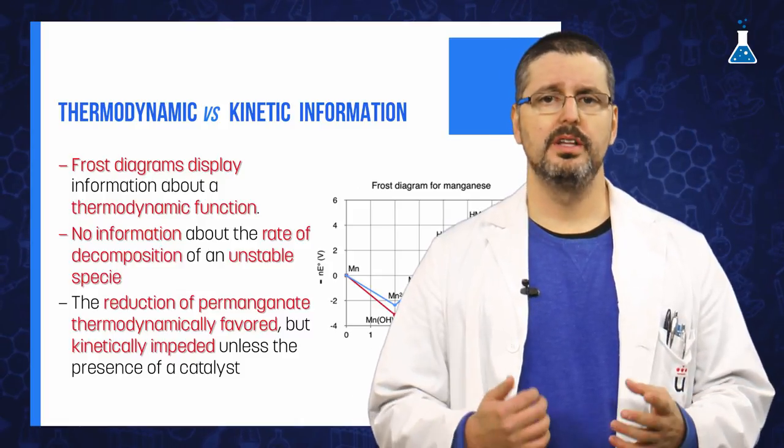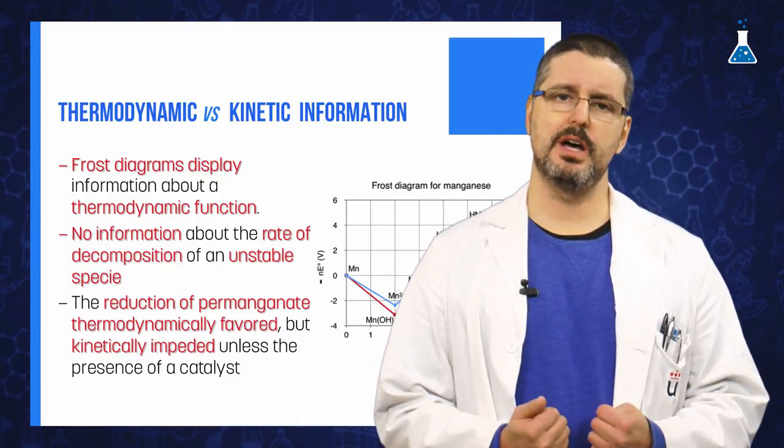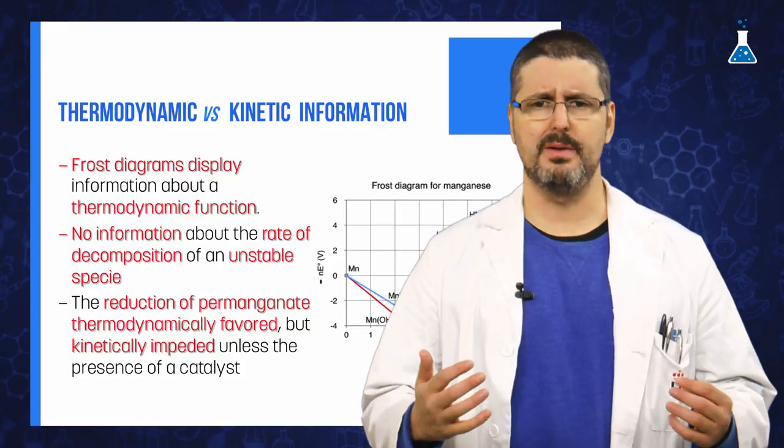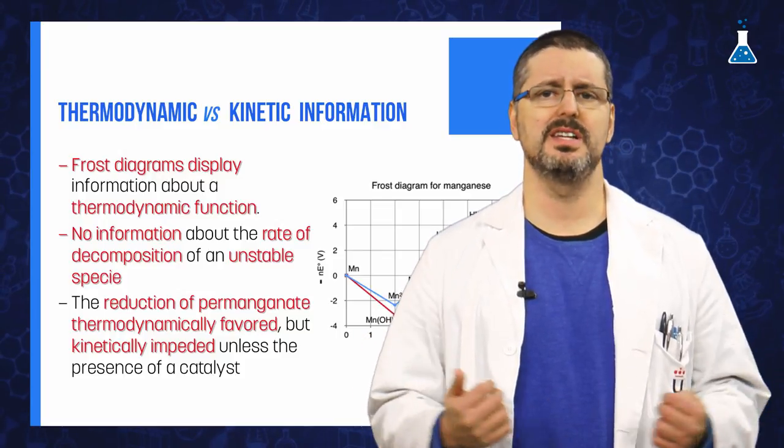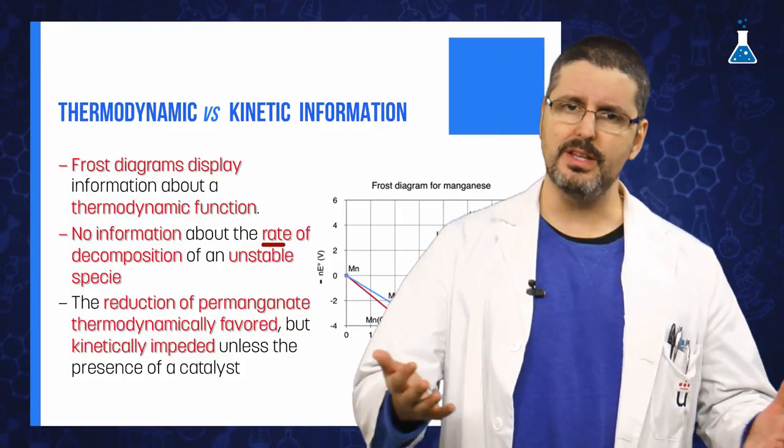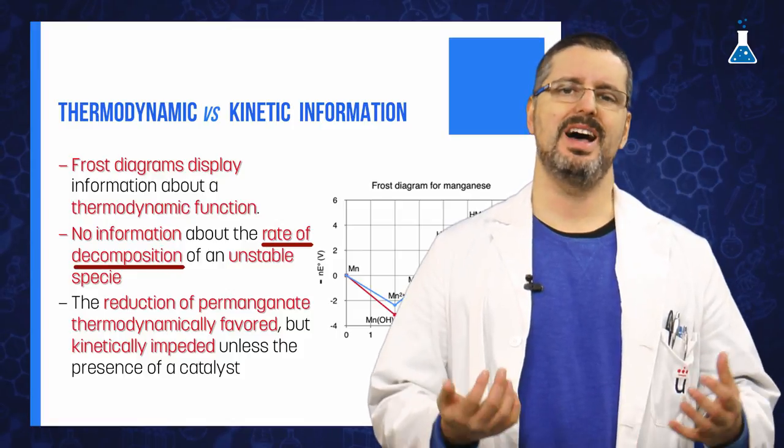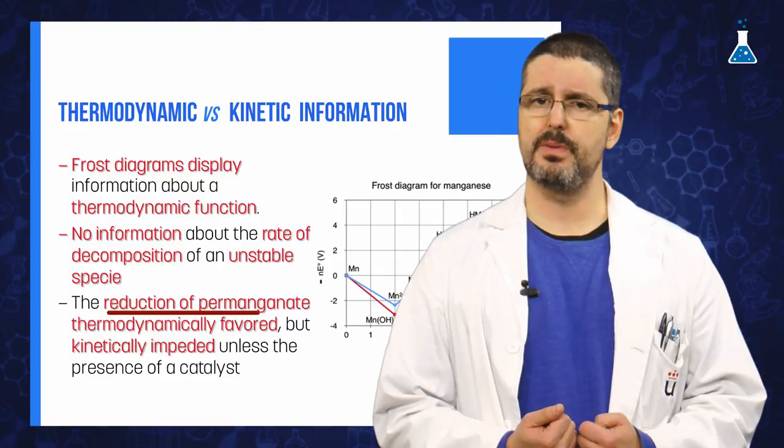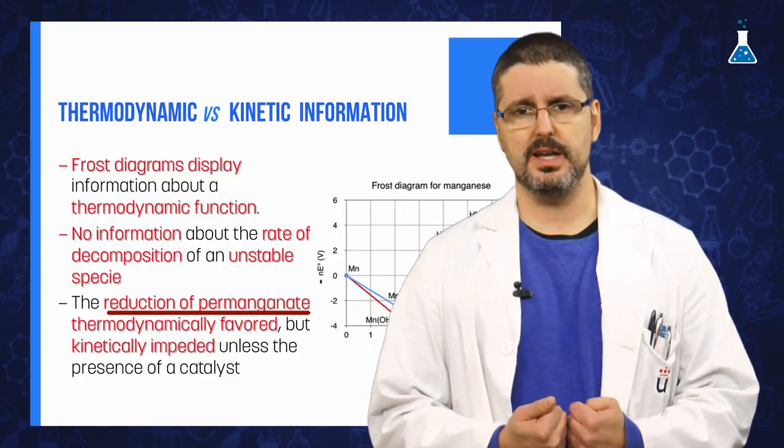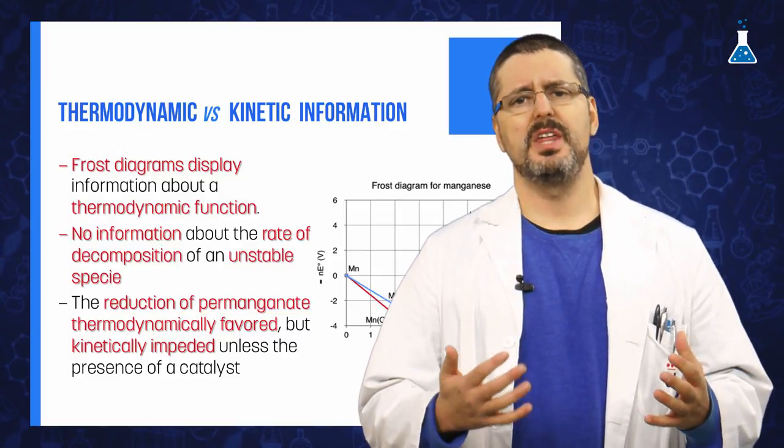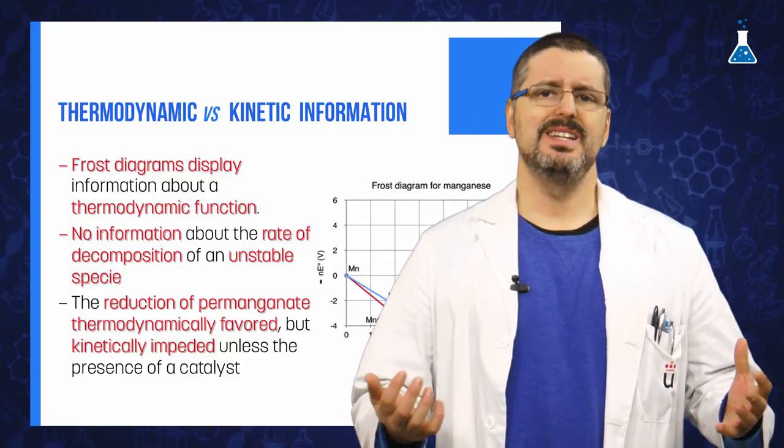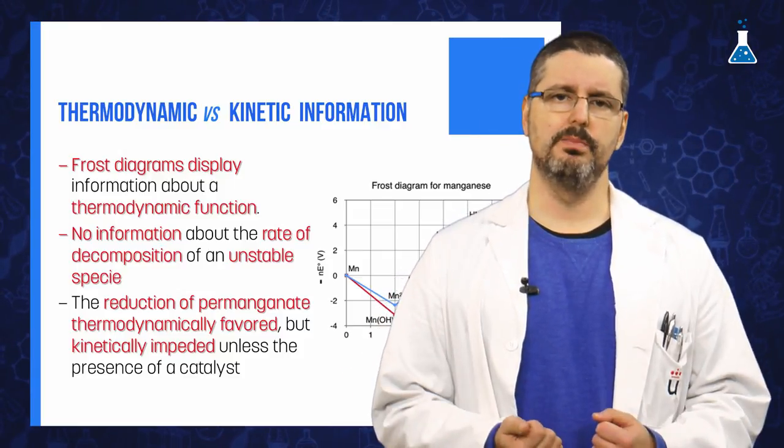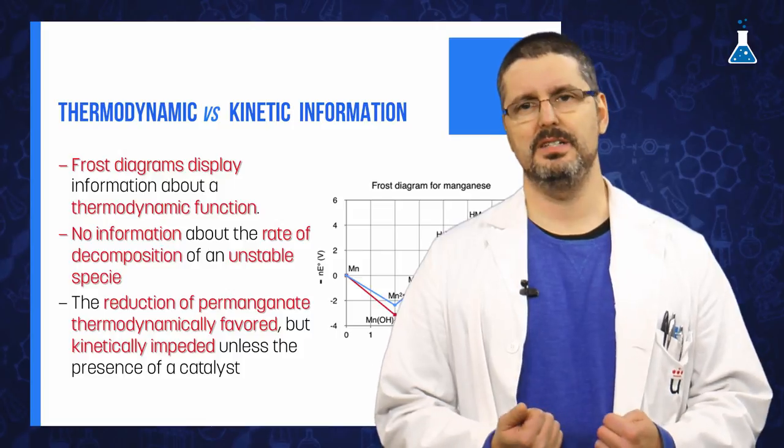Finally, it is important to know that the Frost diagram displays information about a thermodynamic function, but it doesn't contain any information about the rate of decomposition of a particular unstable species. This aspect is very clear in the reduction of permanganate to a lower oxidation state, which is thermodynamically favored but is kinetically not favored unless there is present a catalyst.